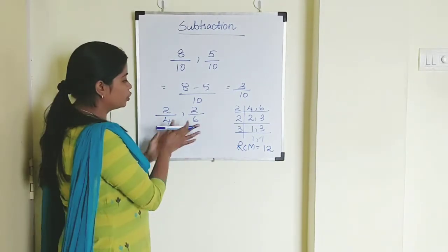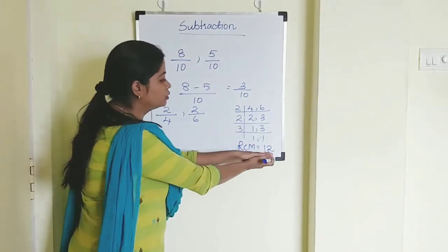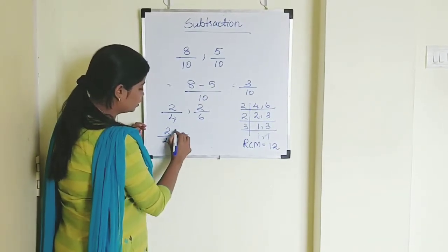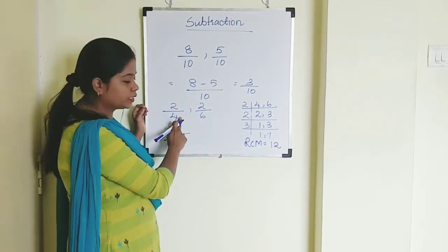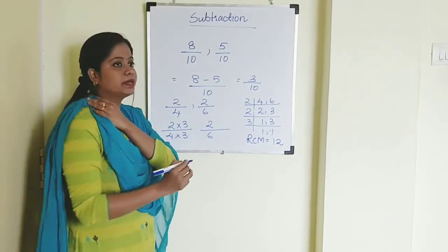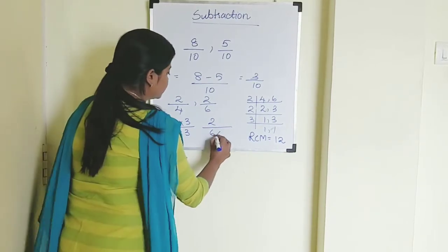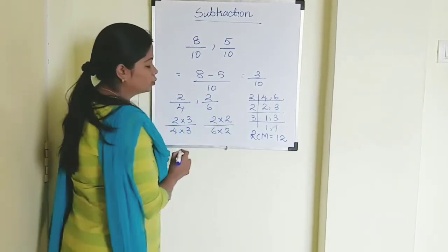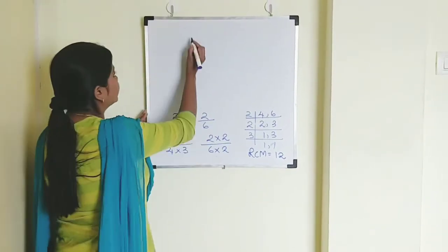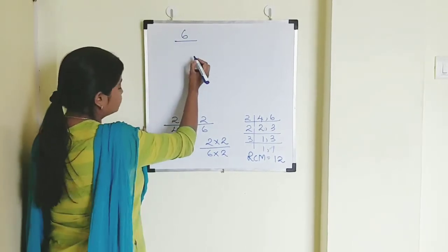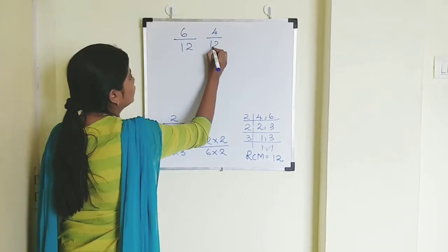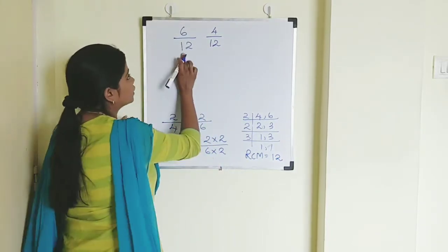Once you have found the LCM, you need to change the denominator to that number. So for 2 by 4: with what number do you multiply 4 to get 12? That's 3. For 2 by 6: with what number do you multiply 6 to get 12? That's 2. So we get 6 by 12 minus 4 by 12. Now the denominators are the same.